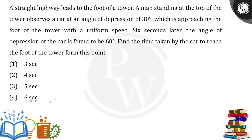This question says a straight highway leads to the foot of a tower. A man standing at the top of the tower observes a car at an angle of depression of 30 degrees — so the angle of elevation is also 30 degrees. The car is approaching the foot of the tower with uniform speed. Six seconds later, the angle of depression of the car is found to be 60 degrees.